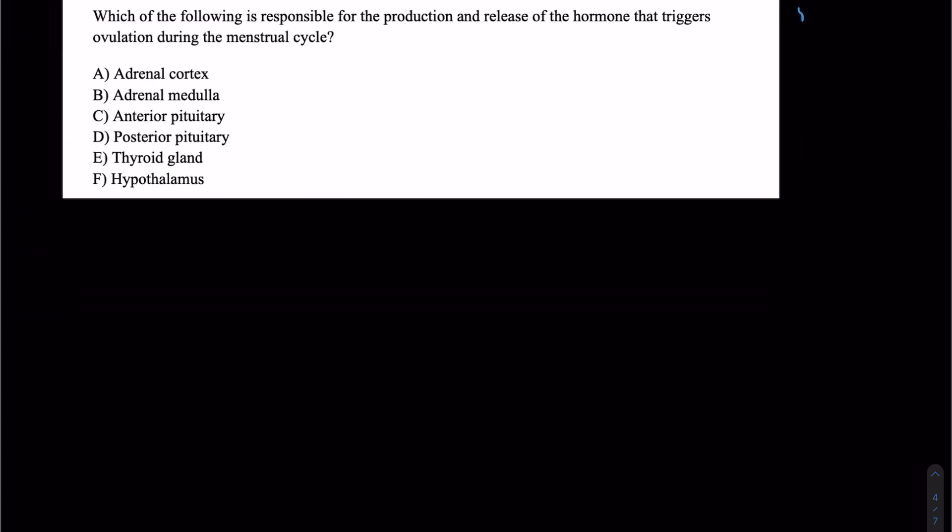Let's do this next practice question. Which of the following is responsible for the production release of the hormone that triggers ovulation during the menstrual cycle? This is kind of a multi-step question. We need to know that the LH surge stimulates ovulation. That's something you learn in the reproductive section of the MCAT. So we need to know where LH is going to be secreted from. That LH surge is going to be primarily a result of the anterior pituitary releasing luteinizing hormone to stimulate ovulation.